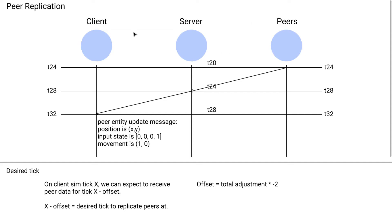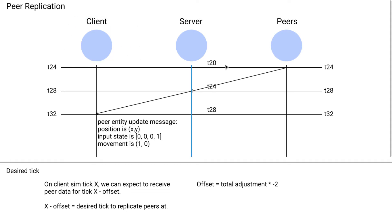Up to this point, we've been looking at the client and the server, but we haven't put much consideration into who else is talking to the server in our system — all the peers. These are all just client applications just like ours. Because we are focusing on this client, every other client is a peer. They are just other clients running the same code, trying to do the same things that our client has been doing in all the previous videos.